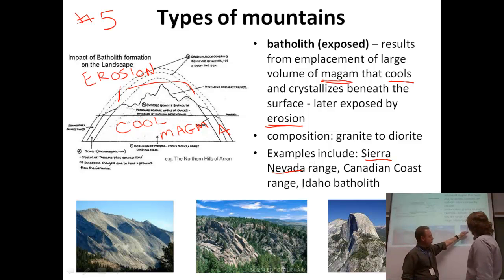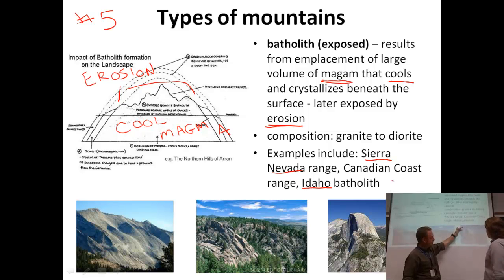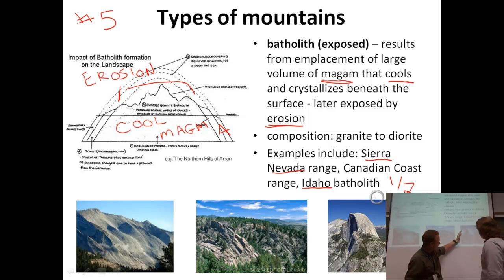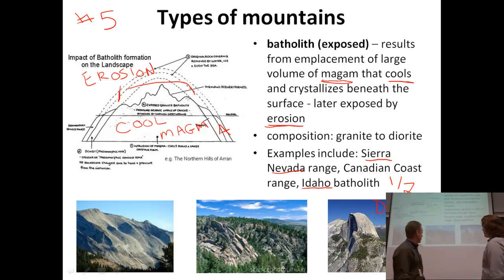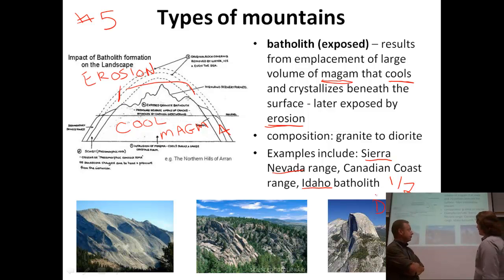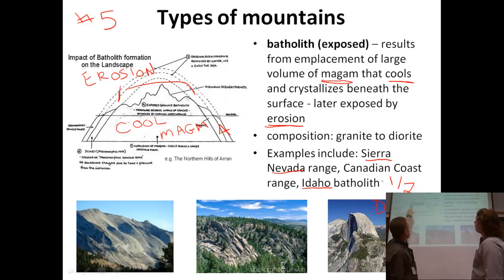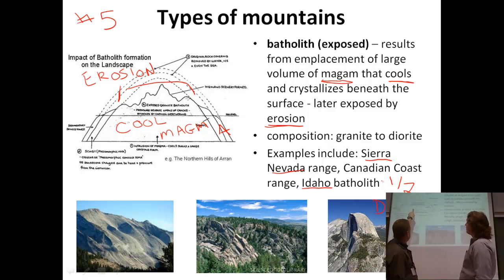Over time that gets eroded away at the surface, and you see this really hard, resistant chunk of rock sticking up — something neat to rock climb. Examples include the Sierra Nevada Range, Canadian Coast Range, and the Idaho batholith. That picture is probably Half Dome — half of the dome. We'll learn about glaciers later on — they did something there. Exfoliation is also common with these batholiths — the outside gets exfoliated and you're left with the pointy part in the middle.